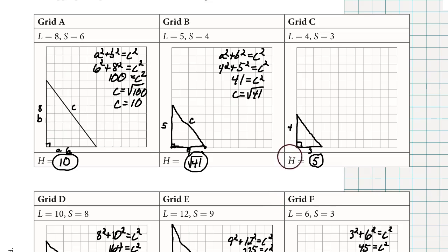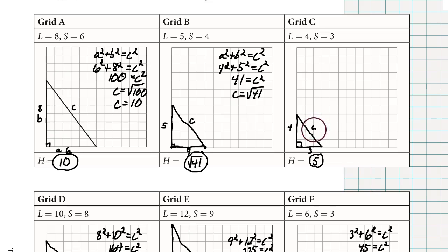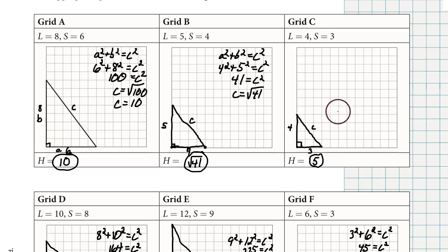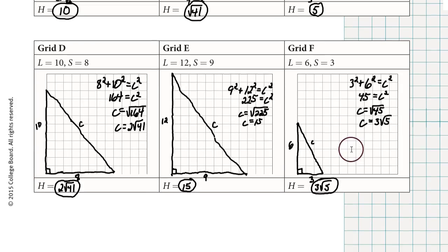Here's the answer for grid C. The hypotenuse is the lower case C in the Pythagorean theorem. This is a 3, 4, 5 right triangle, so without doing any work, the hypotenuse is 5. Here are the answers for grids D, E, and F.